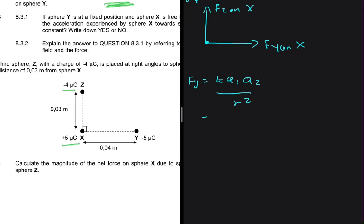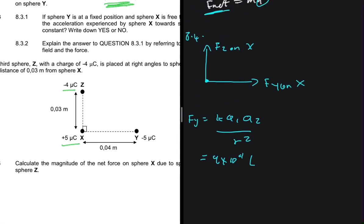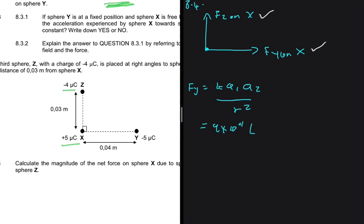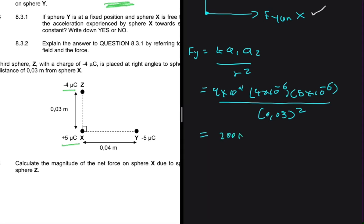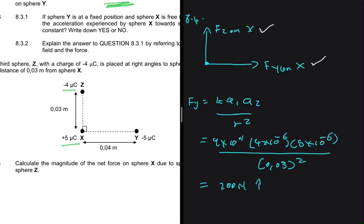So what is K? Constant again, so we know that we have 9 times 10 to the power of 9. Then Q1, like I said, we're only interested in the magnitude. You determine the direction by doing what we just did here with the vectors. Here when you're calculating, you're just substituting the charges without the sign. So let's go ahead and solve the problem. We're going to have 4 times 10 to the minus 6, then we're supposed to multiply that by 5 times 10 to the minus 6. And then we're going to divide everything by R squared. So we have 0.03 meters squared. Then if you put that in your calculator, you should get 200 newtons upwards.